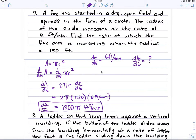Okay, so number seven was one that you had started working on on your own. A fire starts in a dry open field, spreads in the form of a circle. The radius of the circle increases at a rate of six feet per minute.